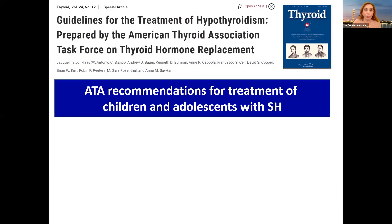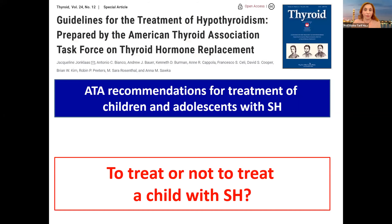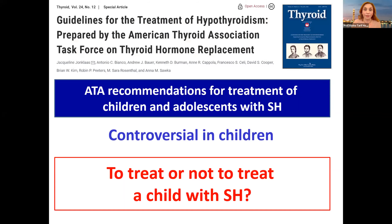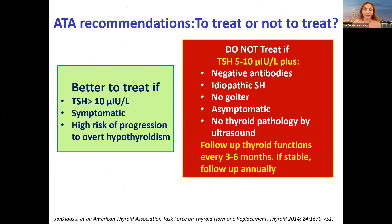What about the guidelines proposed by the American Thyroid Association (ATA) for children and adolescents with subclinical hypothyroidism? Same question — to treat or not — same answer: controversial in children. The ATA recommendations: do not treat if TSH ranges from 5 to 10 plus any of the following criteria — negative antibodies, idiopathic, no goiter, asymptomatic, no thyroid pathology by ultrasound.